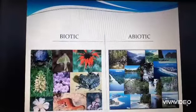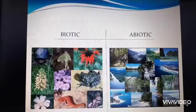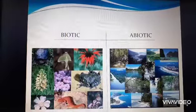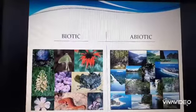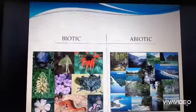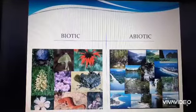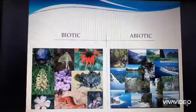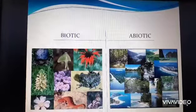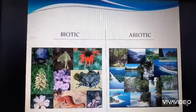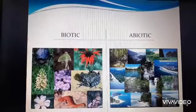On the basis of origin, natural resources can be classified as biotic and abiotic. Abiotic resources are non-living, for example, soil, rocks, minerals, etc.